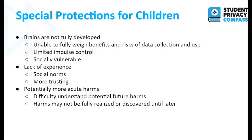Children may be socially vulnerable. This is related to the fact that they have a lack of experience and really want their peers to like them, want to identify with those around them. They don't necessarily know social norms and may be more trusting. At the end of the day, you see potentially more acute harms when it comes to children and data and technology.